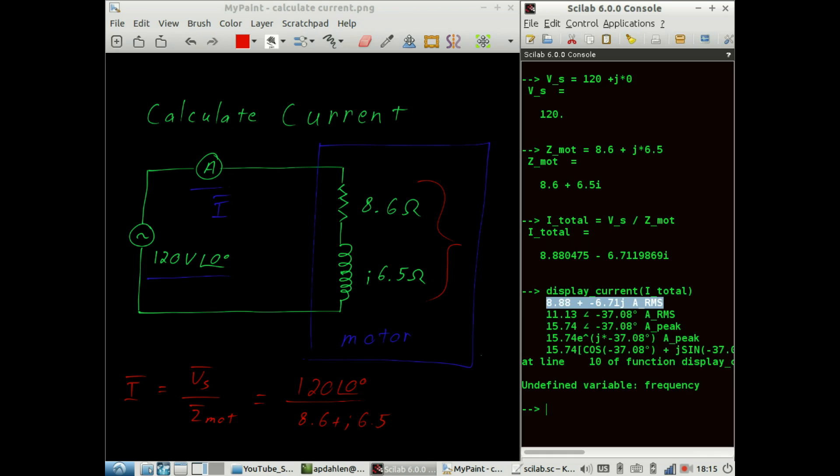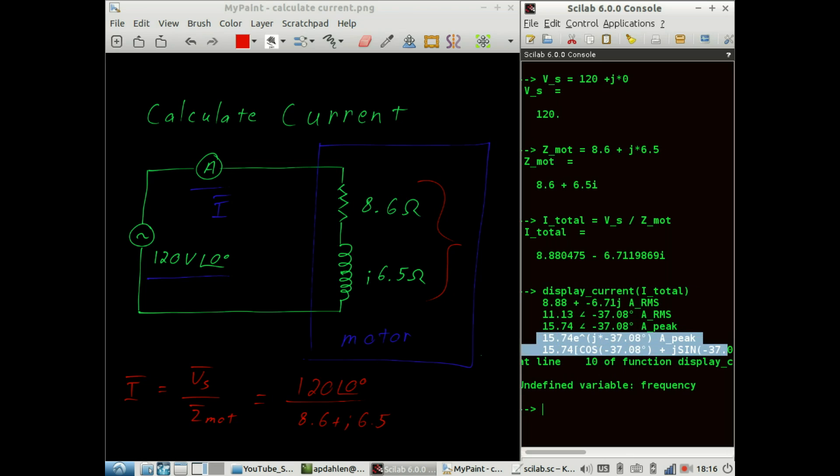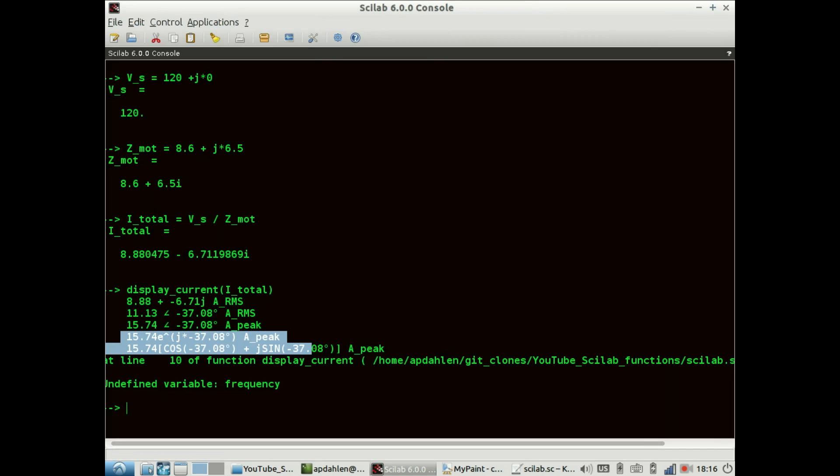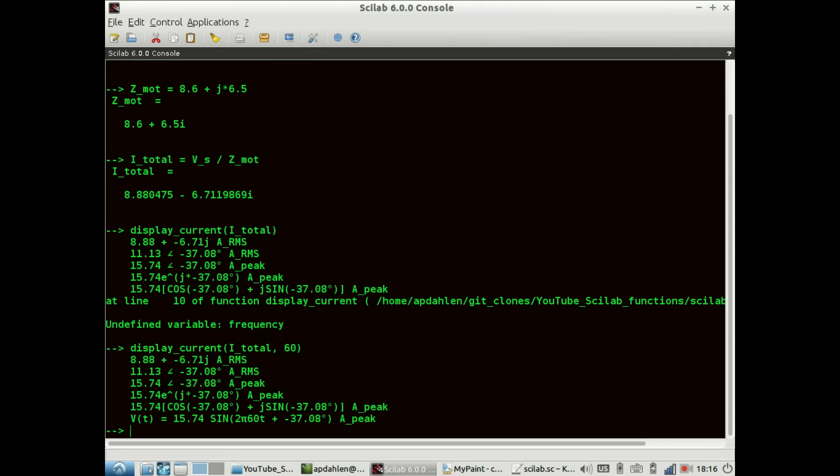Here is the rectangular representation. Here is the phasor for RMS. Here is a phasor for peak. These two are the complex exponential representation. And if we do this again, this time including frequency, we have down here the time domain representation of that current.